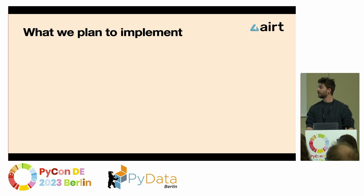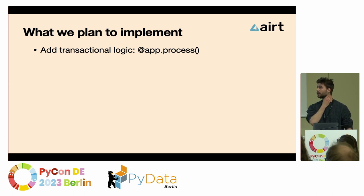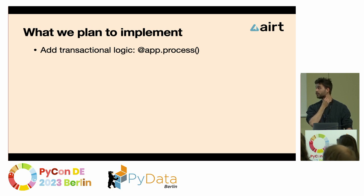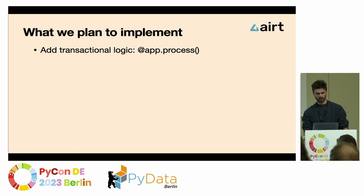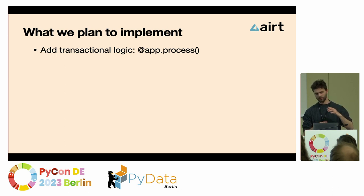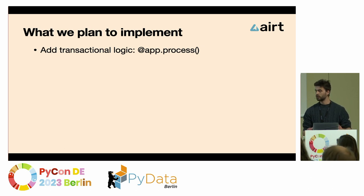What we plan to implement in the future: we want to add transactional logic. At the moment, when you consume a message, you automatically commit the offset, and if your application crashes, that offset is already committed and you lose that message. We want to add an `app.process` decorator which will combine your consumers and producers, so if the function doesn't complete successfully, we won't commit the offsets and you won't lose the messages.